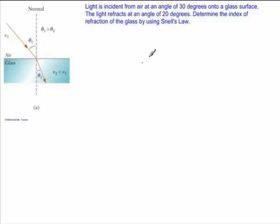I have an example written out that says light is incident from air at an angle of 30 degrees. So over here, light comes in at an angle of 30 degrees, and it is incident on a glass surface here. And it refracts at an angle of 20 degrees. And we'd like to determine what is the index of refraction of the glass.